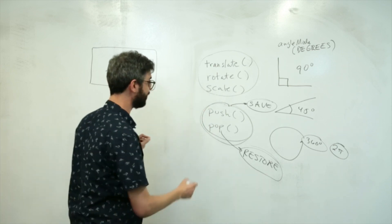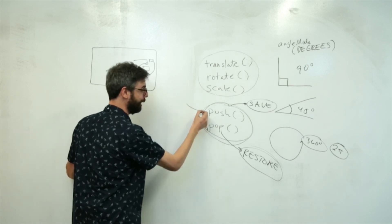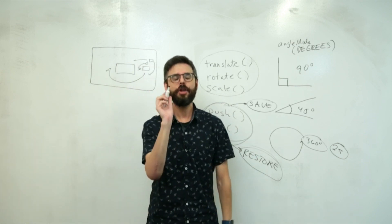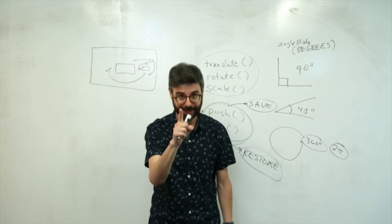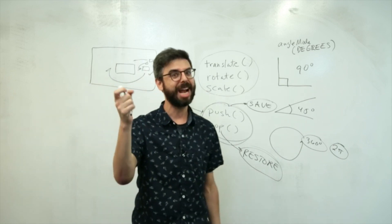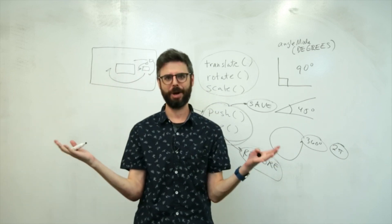So one thing you should realize is you can only have as many pops as you have pushes. You can only restore the amount of things you've saved. But the question arises, when I save a bunch of times and I restore, which thing that I save do I restore?